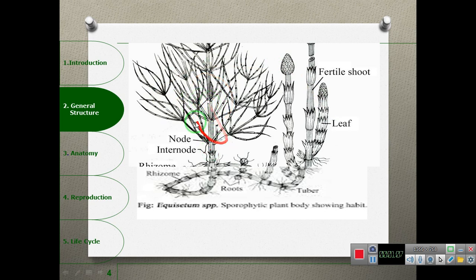These branches are called infertile or sterile branches. The fertile shoot is the reproductive part, called a strobilus or cone. The plant body consists of the rhizome and roots.